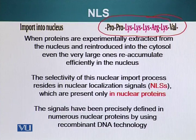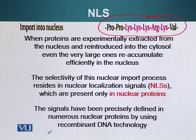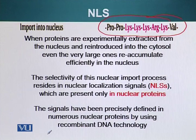The selectivity of this nuclear import process resides in the nuclear localization signals, or NLS, which are present only in nuclear proteins. These signals have been precisely defined in numerous nuclear proteins using recombinant DNA technologies.